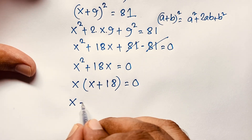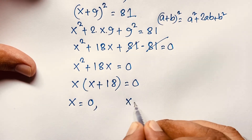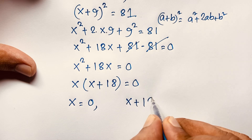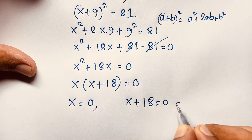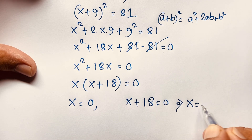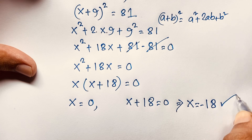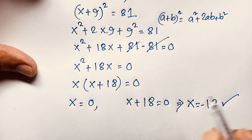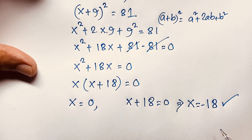Now here x = 0, and in the other case x + 18 = 0, so x = −18. Our final solution is x = 0 and x = −18.